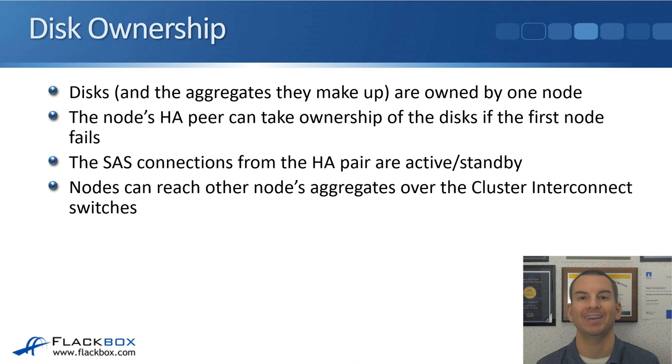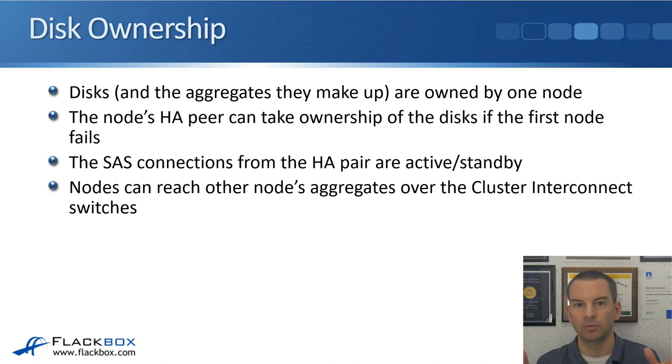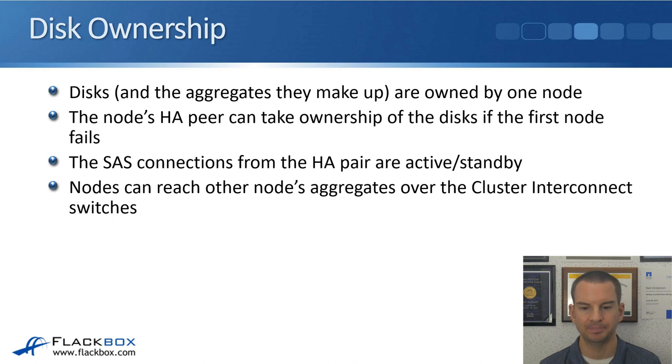For the disks that are owned by controller 2, it's always controller 2's SAS connections that are active. Controller 1's connections are standby — they only come into effect if controller 2 fails and controller 1 takes over ownership of its disks. Those SAS connections don't give you active-active load balancing; it's active standby for redundancy.